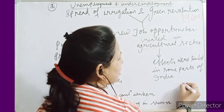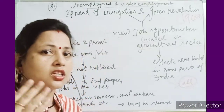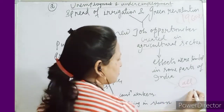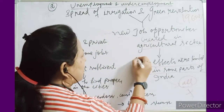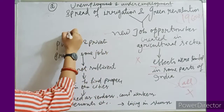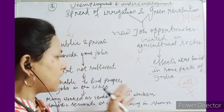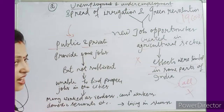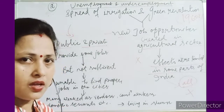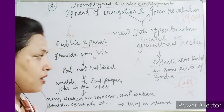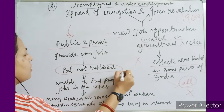This could not satisfy all the people's needs or provide employment to everyone. The effects were limited to some parts of India. In urban areas, some public and private sector industries provided jobs to some people, but those jobs were not sufficient for all.